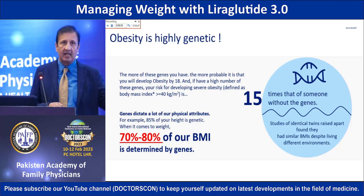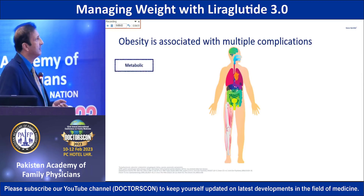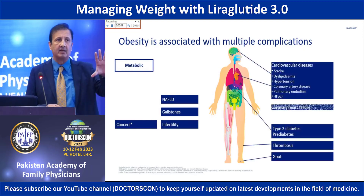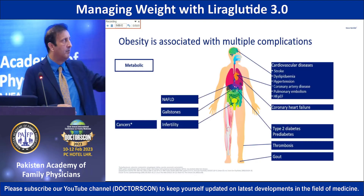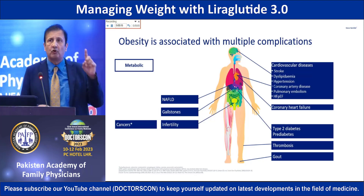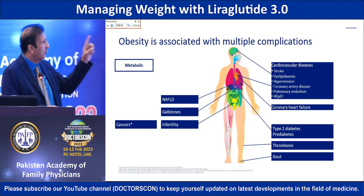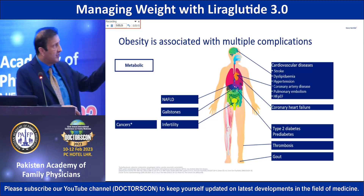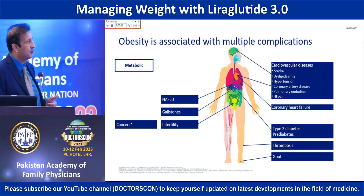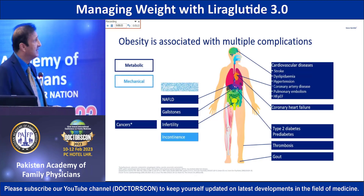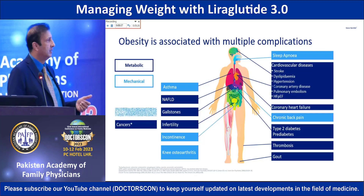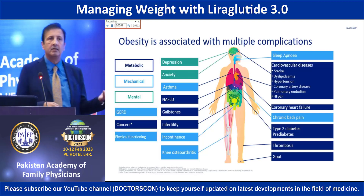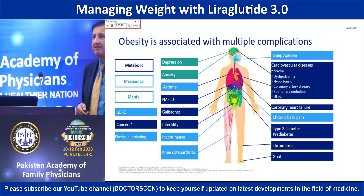Good genes mean a healthy life and lesser risk of illness. Obesity is associated with multiple complications. On the metabolic side: increased cancer risk, non-alcoholic fatty liver disease, gallstones, infertility, cardiovascular disease, stroke, dyslipidemia, hypertension, coronary artery disease, and diabetes. On the mechanical side: incontinence, asthma, osteoarthritis, and sleep apnea. And on the mental health side, obese persons are more likely to be depressed and to have psychological issues.